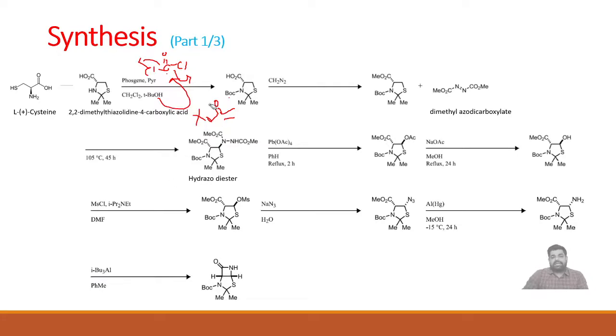The second step is methylation using diazomethane. Previously in the 1960s and 70s, diazomethane was commonly used for methylation of acids, but due to its explosive nature, nowadays we don't use diazomethane. Once we get the methylation or ester formation, the next step is treatment with dimethyl azodicarboxylate. This will react with our molecule at this position and we get hydrazodiester like this.